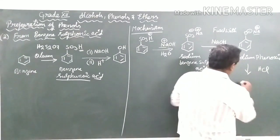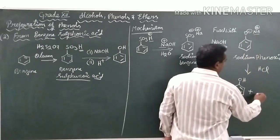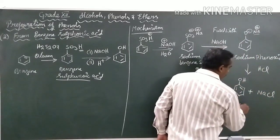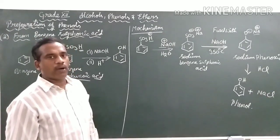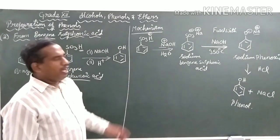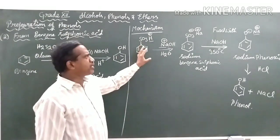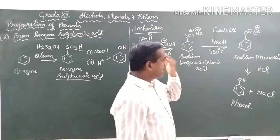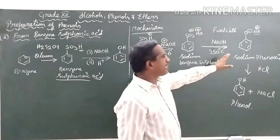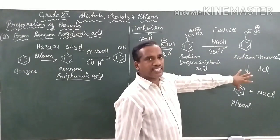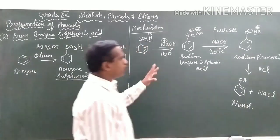The H⁺ replaces sodium, forming the final product phenol and NaCl as a byproduct. So we got phenol. Phenol is obtained by reacting benzene sulphonic acid with aqueous NaOH to give sodium benzene sulphonate, then fusing with NaOH at 350°C to give sodium phenoxide as an intermediate, and upon reacting with a mineral acid like HCl, the H⁺ replaces sodium giving phenol.